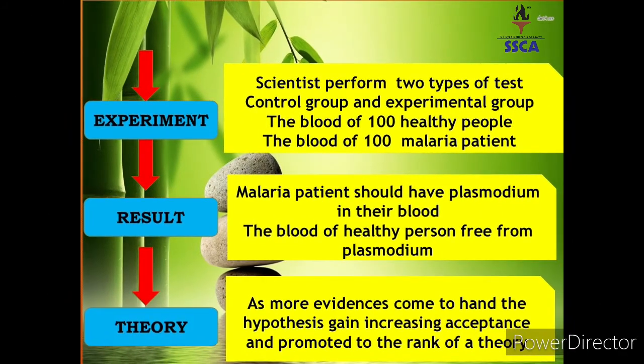After deduction, next step is experimentation. Scientists performed two types of tests using a control group and an experimental group. Control group میں healthy لوگوں کے 100 blood samples لیے گئے، اسی طرح malaria patients کے 100 blood samples لیے گئے۔ The result found was: malaria patients should have plasmodium in their blood, while the healthy person is free from plasmodium۔